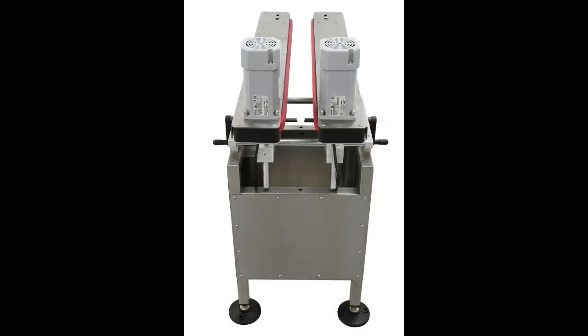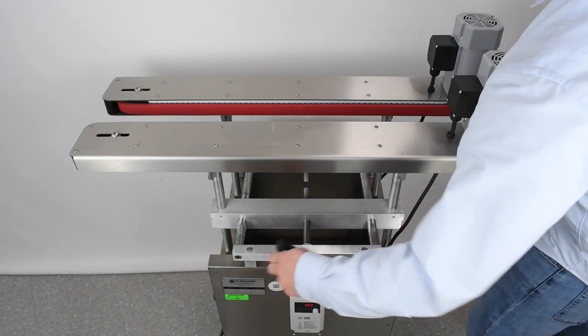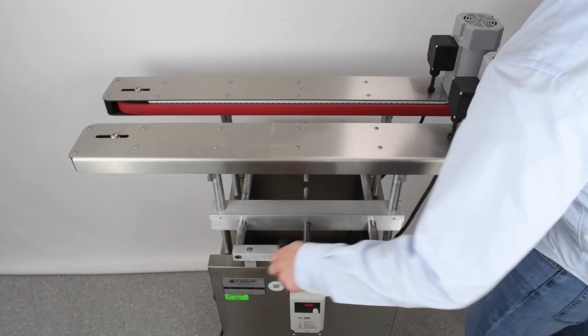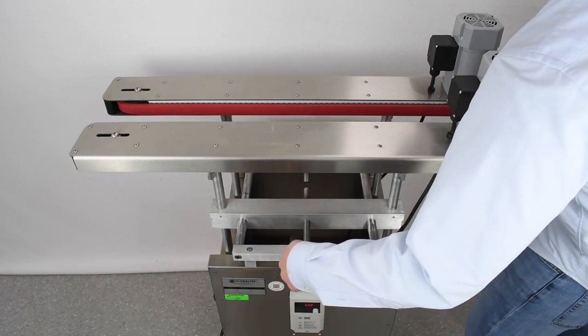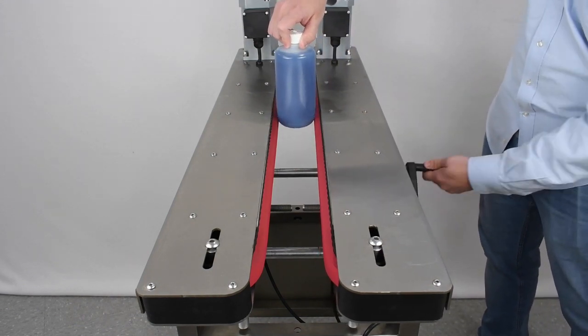With the bottomless conveyor unpacked, we can adjust the width of the belt cassettes to carry our containers. To do so, turn the crank handle on either side of the conveyor to move that respective cassette in or out. Turn the handle clockwise to move the belt outwards. Turn the handle counterclockwise to move the belt inwards. Move your cassettes outwards until you can hold your container up between them.